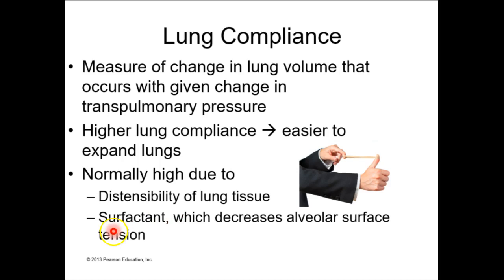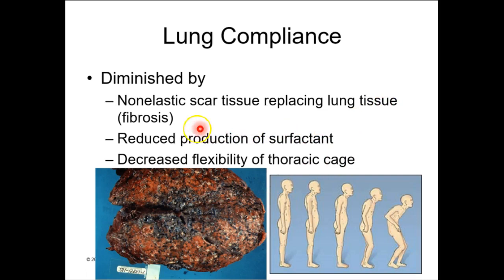Lung tissue is distensible — distensible means that stretching portion; elasticity was the recoiling back. As we age, we're exposed to more and more toxic things that we inhale. Living in or near a city means this is true for each of us; if you're a smoker it's even more true. You're going to experience some degree of fibrotic scarring in your lifetime, and the more exposure to toxic things, the more fibrosis can occur.